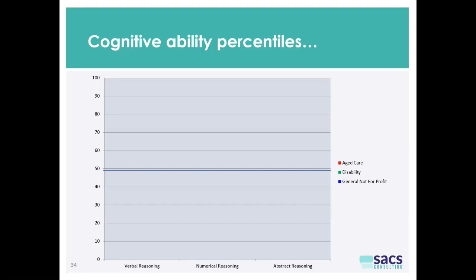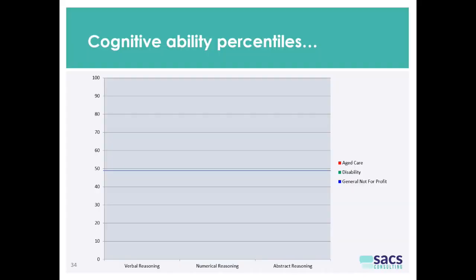The general not-for-profit sector includes things like community development, other forms of the health sector, associations and clubs, and sporting organisations. So we have good data in live samples on each of these three sectors.